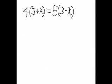When solving equations with brackets, we use the distributive rule. This is a rule where you multiply the number outside the brackets with the numbers inside the brackets. So in this case, we would do 4 times 3 plus 4 times x. And on the other side of the equals sign, 5 times 3 minus 5 times x.